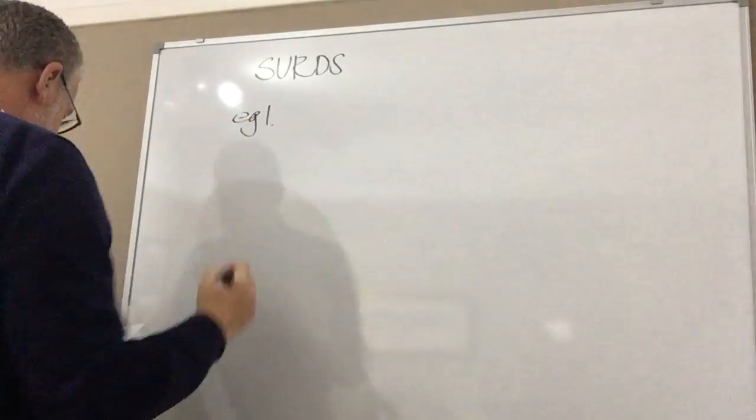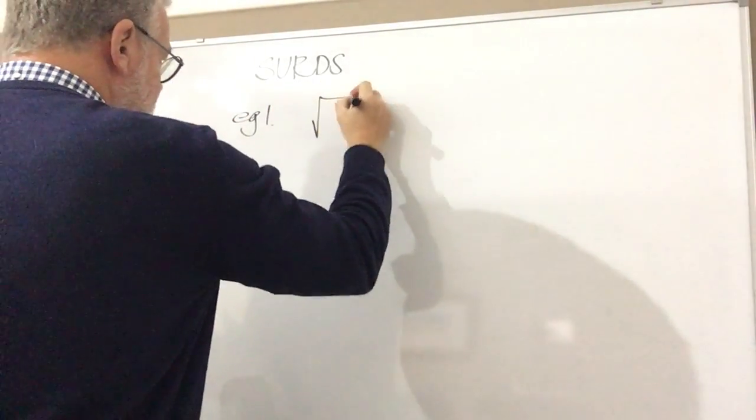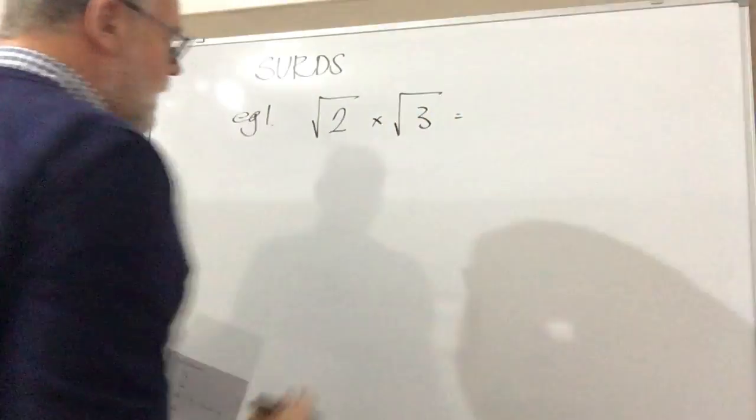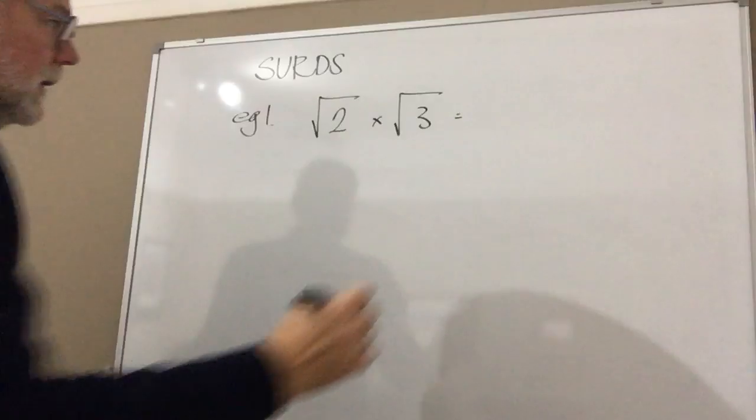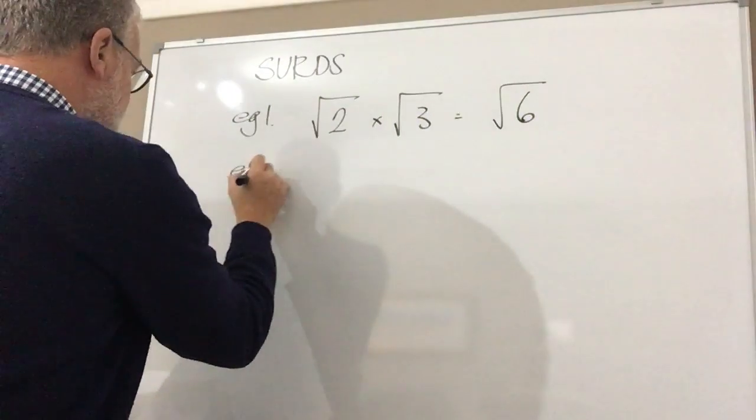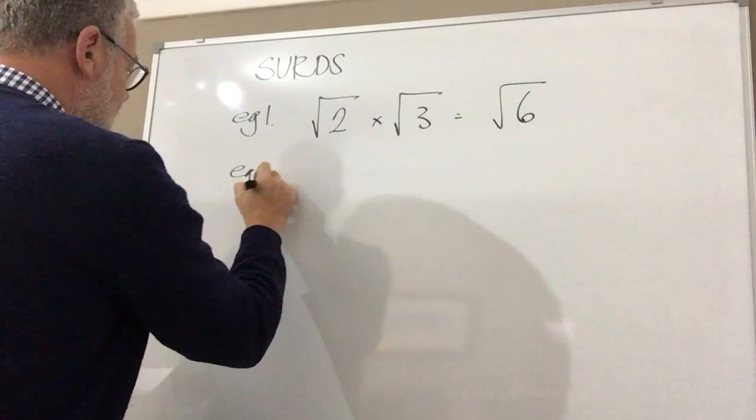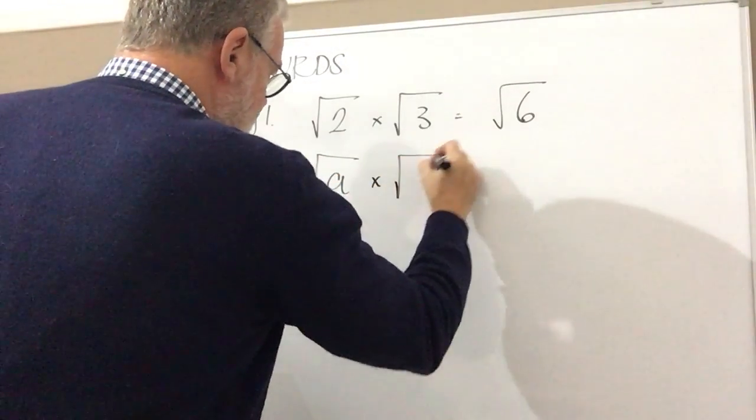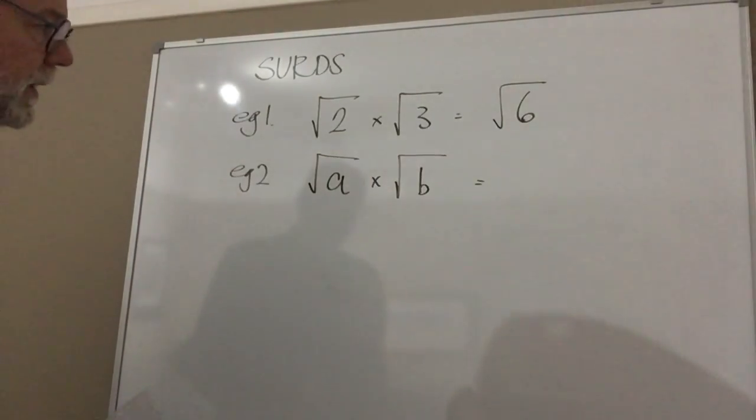So first point, really, example number one is quite simply if I said root 2 multiplied by root 3, the answer we simply multiply those two numbers together and it gives us root 6. The next example, sometimes you might find that as a question, what's root a multiplied by root b?